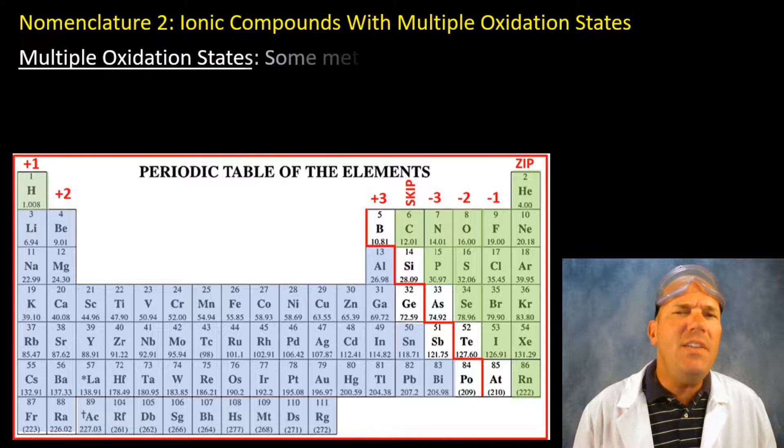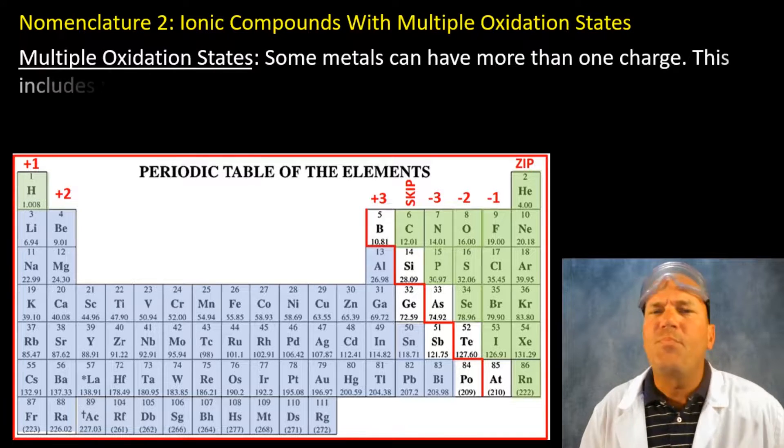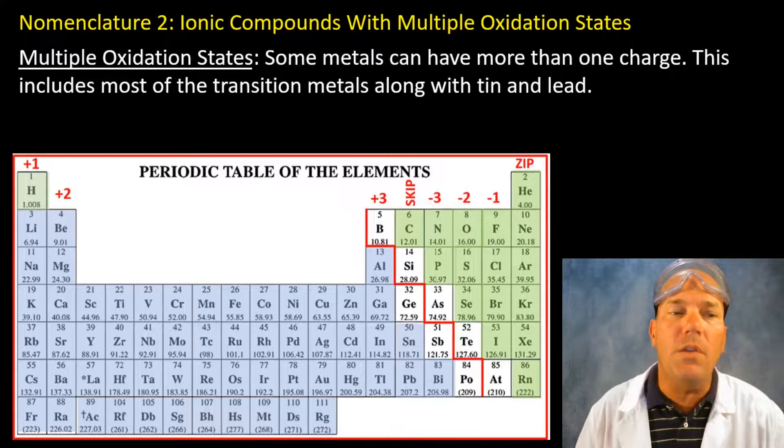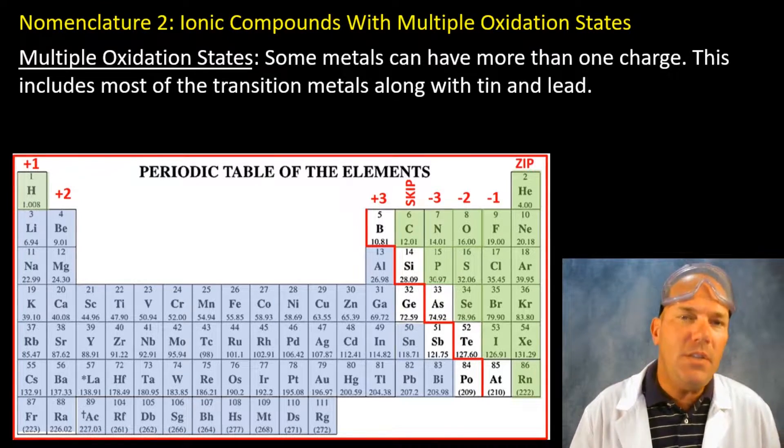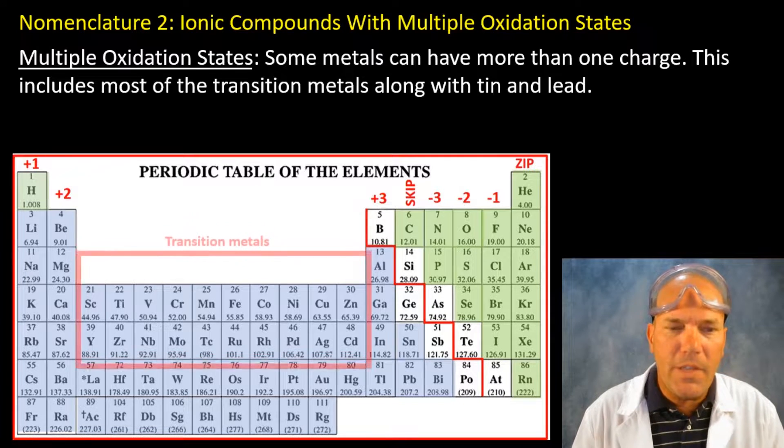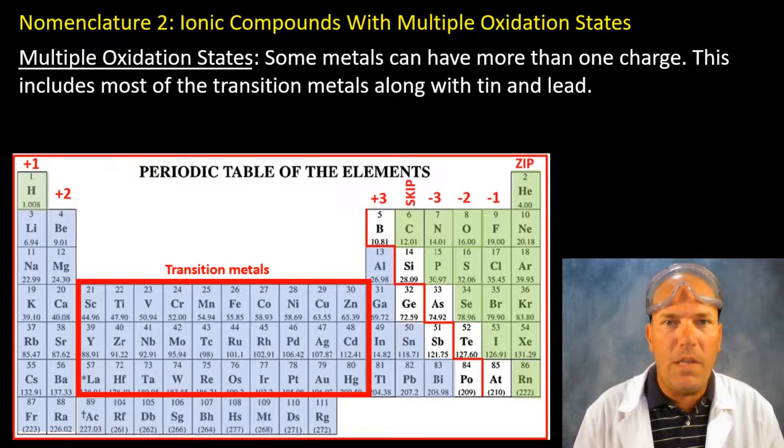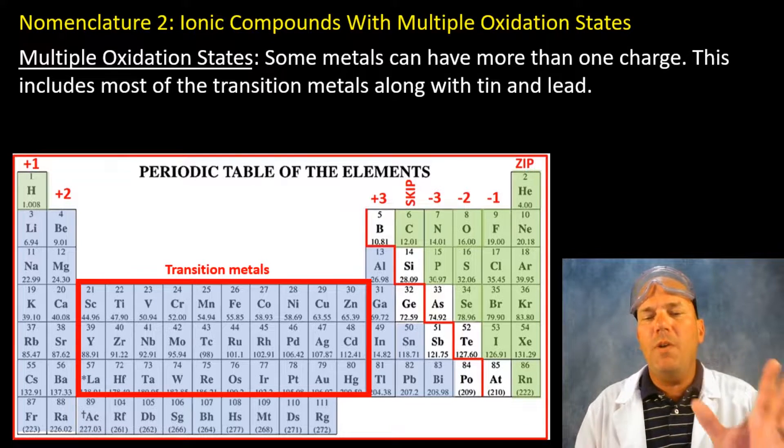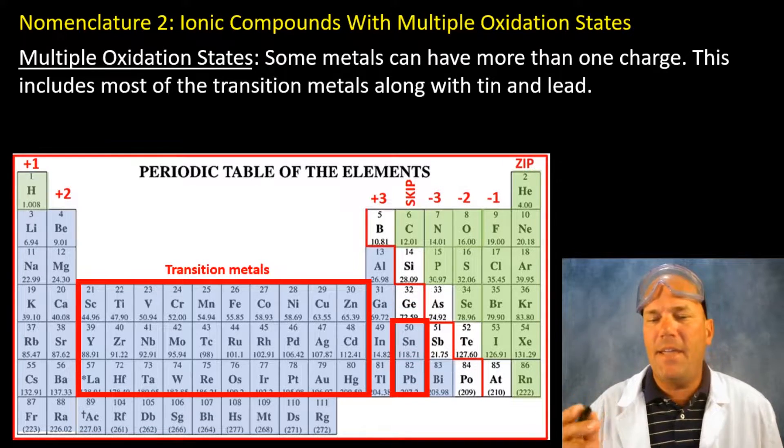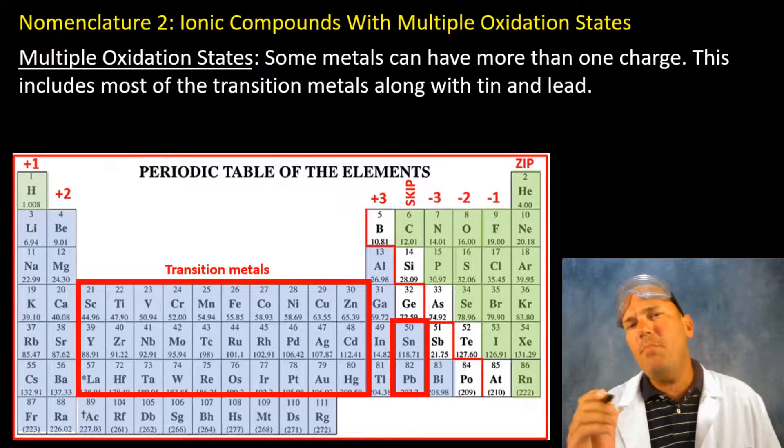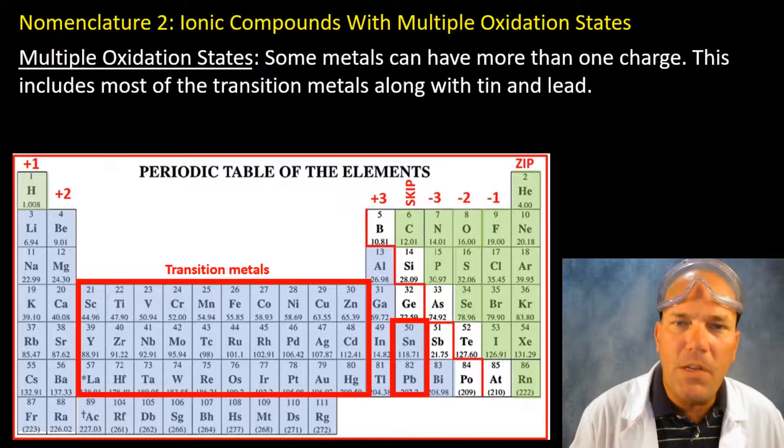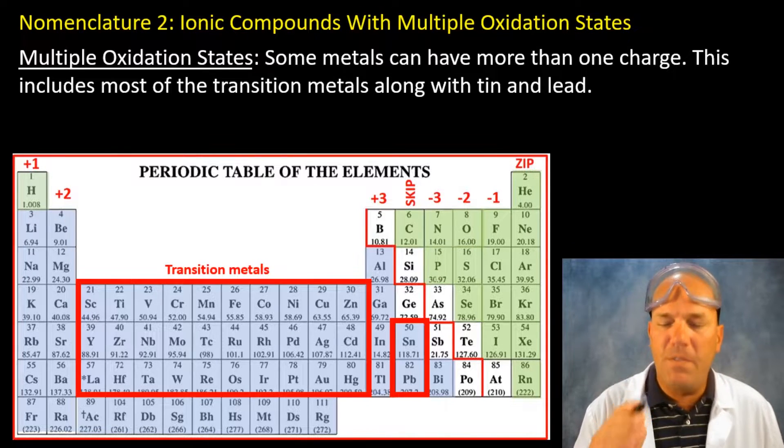Multiple oxidation states refers to the fact that many metals have more than one charge and this includes the transition metals. Recall I skipped over them in the first video along with tin and lead. So I want you to make that note on your periodic table that you started writing on in the first video.